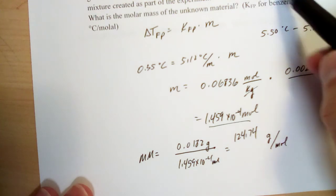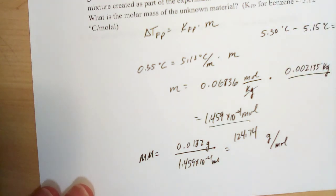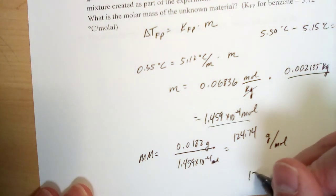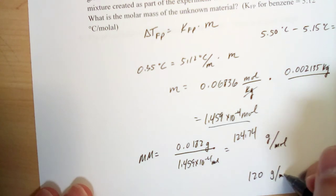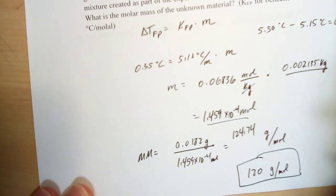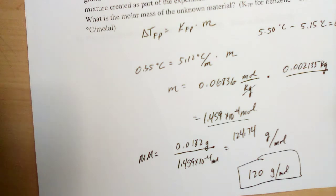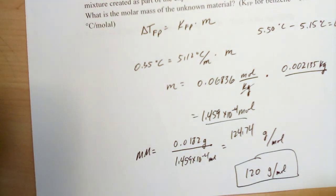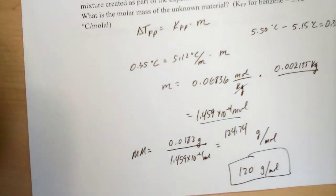Now if we look at the problem, though, we probably are limited to two sig figs here from our temperature change originally, so we should probably just round this to 120 grams per mole based on the data that we have for this problem. Okay, that's it for problem number two. We'll stop the video there, and I'll post a different one picking up with problem three.